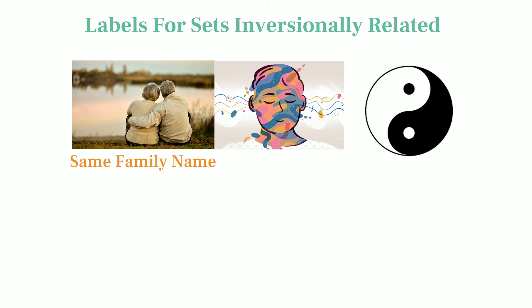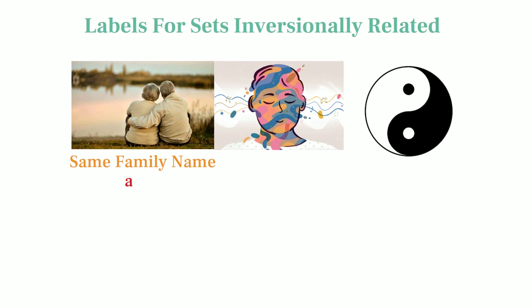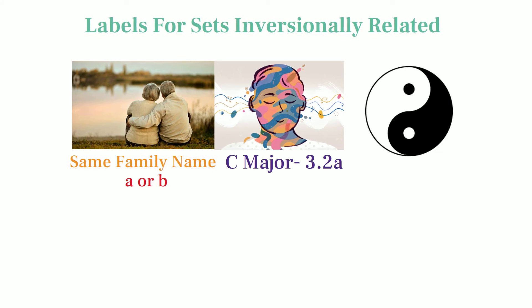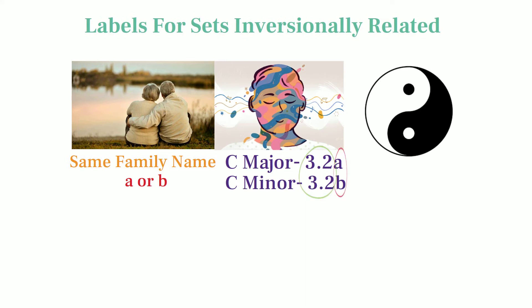Next episode I will explain how labeling sets works, but for the purpose of this video, it's important to remember that sets that are inversion pairs are labeled with the same number, but then marked with either an A or a B. For example, the major triad can be called 3.2a, and the minor triad labeled 3.2b. Same number, different letter.